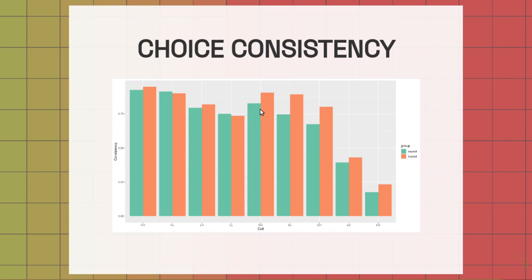For the reject, certainly for reject on the double distractor where both price and quality are bad, they're consistent with that threshold quite a lot of the time. When the distractor is in the price attribute, they're again rejecting 75-60% of the time.